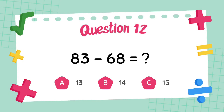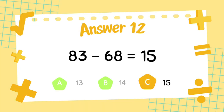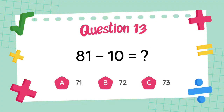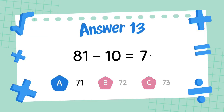What is 83 minus 68? The answer is 15. What is 81 minus 10? The answer is 71.